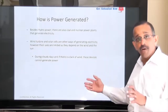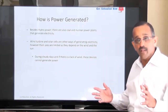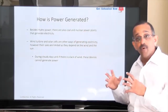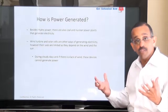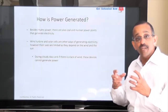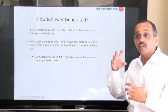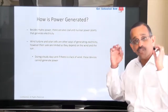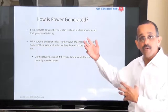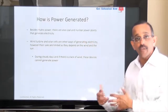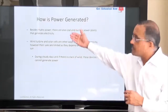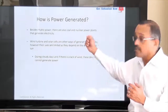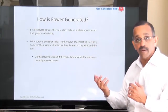Besides hydropower there are other sources of power as well — there's coal and nuclear power. Both basically heat up the water, and the steam that's generated is then used to power the turbines which are connected to generators. The concepts are all the same. In the case of hydro, water flowing turns the turbine; in the case of nuclear and coal, steam generated from heating also turns the turbines.